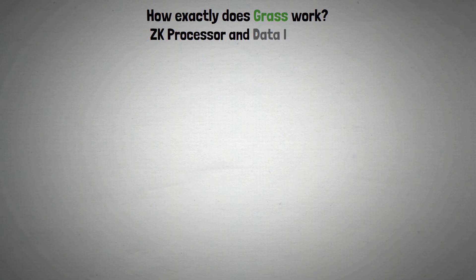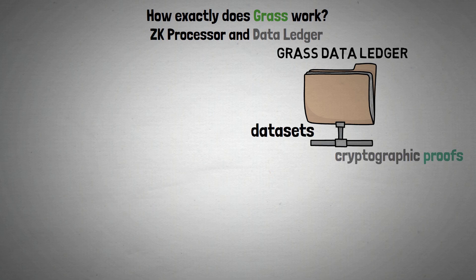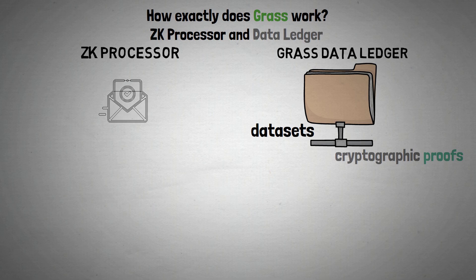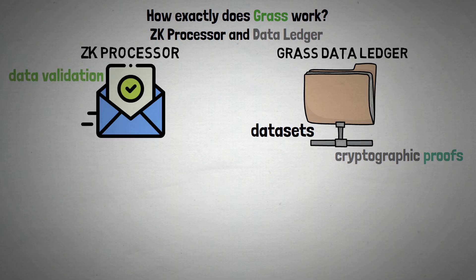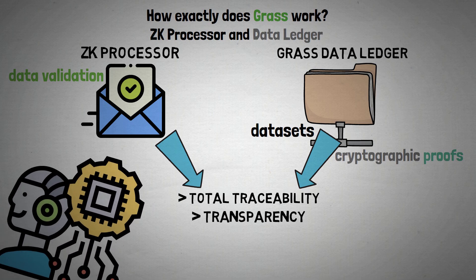ZK processor and data ledger: the GRASS data ledger is a permanent repository that connects data sets to their cryptographic proofs, while the ZK processor generates proofs for data validation. When combined, these elements guarantee total traceability and transparency during the AI training procedure.